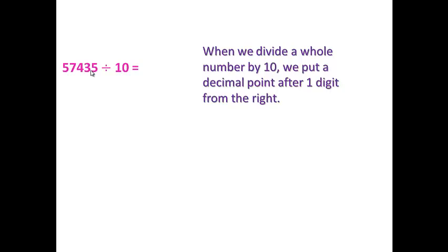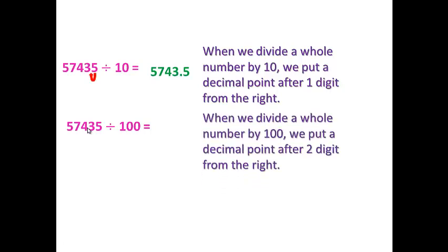For 57,435 divided by 100, we move back 2 places to the left. Start from the ones place and count back 2 steps: 1, 2. The point will set here between 4 and 3. The answer is 574.30.